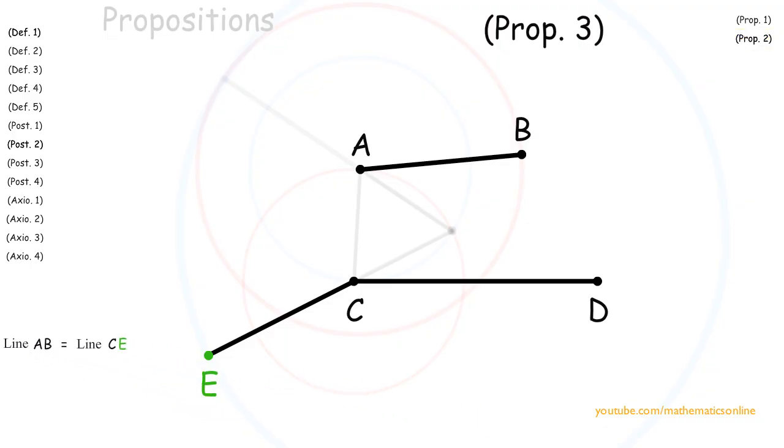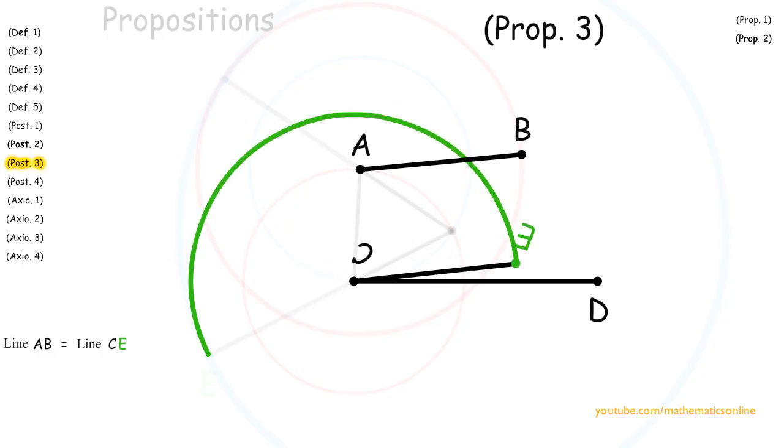For our next step, we create circle CE. Now where circle CE and line CD intersect, we create point F.